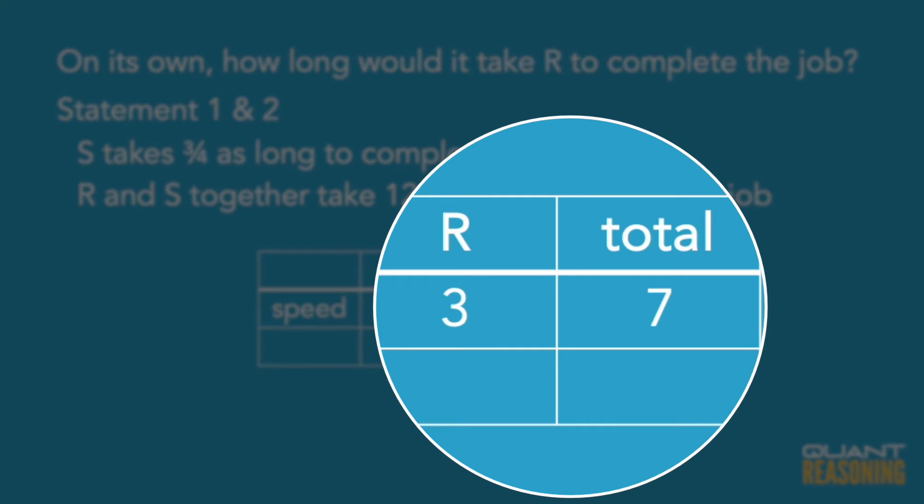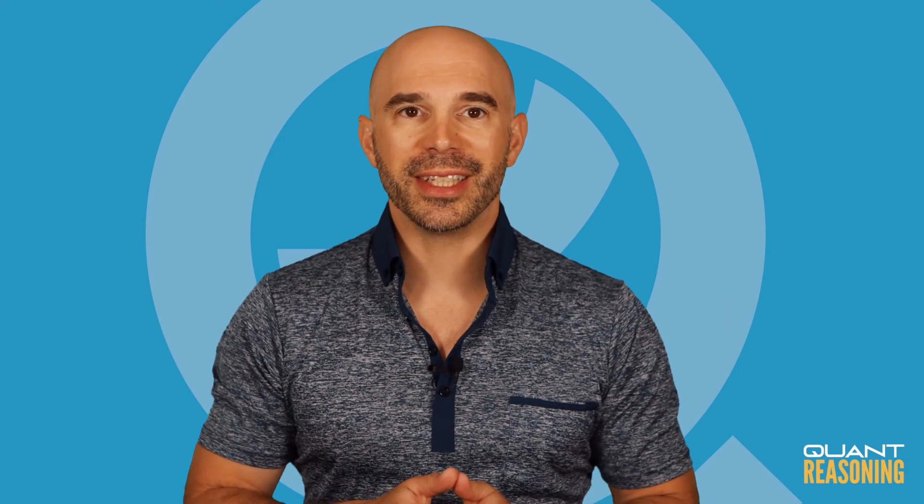Using that same reciprocal relationship, R takes seven-thirds as long as they take together. So how long would it take R on its own? Seven-thirds of 12 minutes — reduce the three with 12 and you get seven times four, which is 28 minutes.